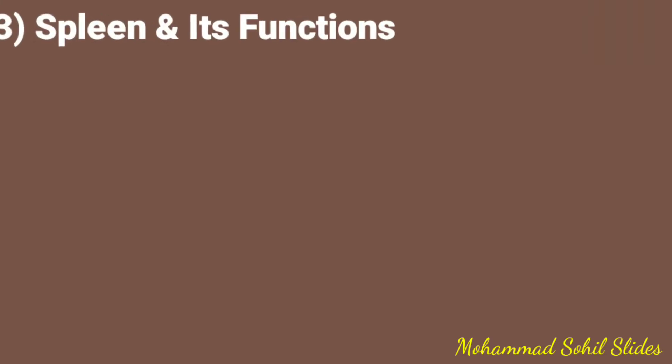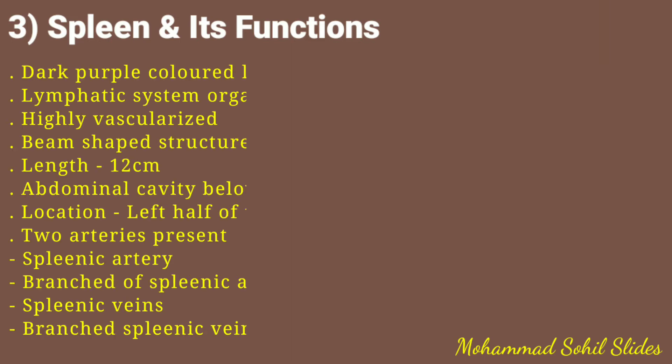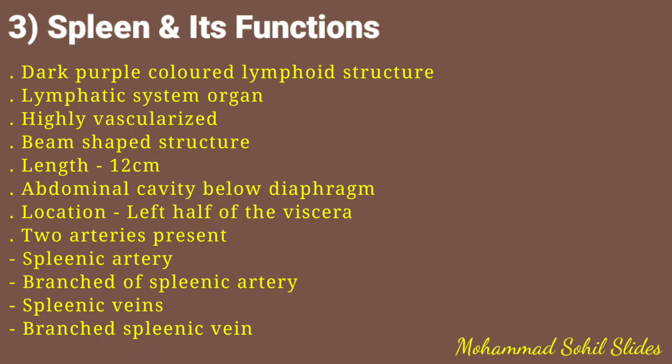Now moving to the next topic: the spleen. The spleen is a dark purple colored lymphoid structure and is a lymphatic system organ. It is highly vascularized, meaning it has a rich blood supply. The spleen is bean-shaped, approximately 12 centimeters in length, and is located in the abdominal cavity below the diaphragm.